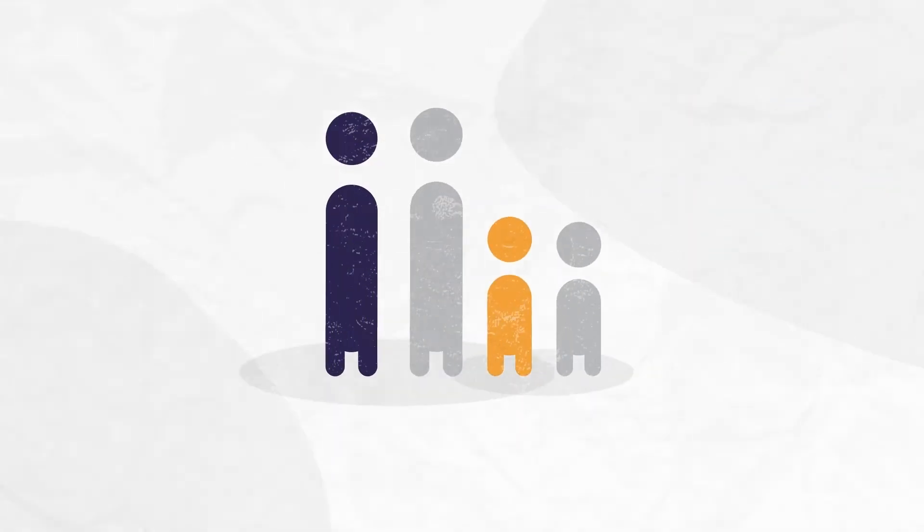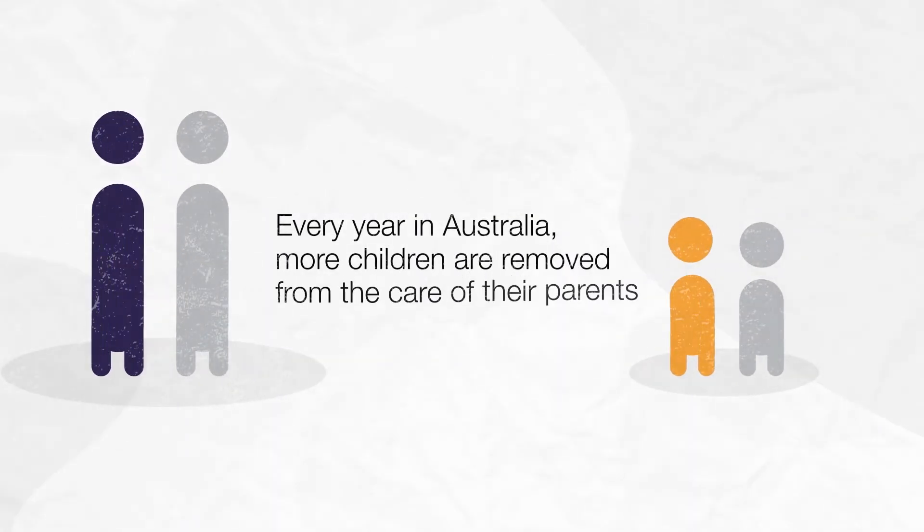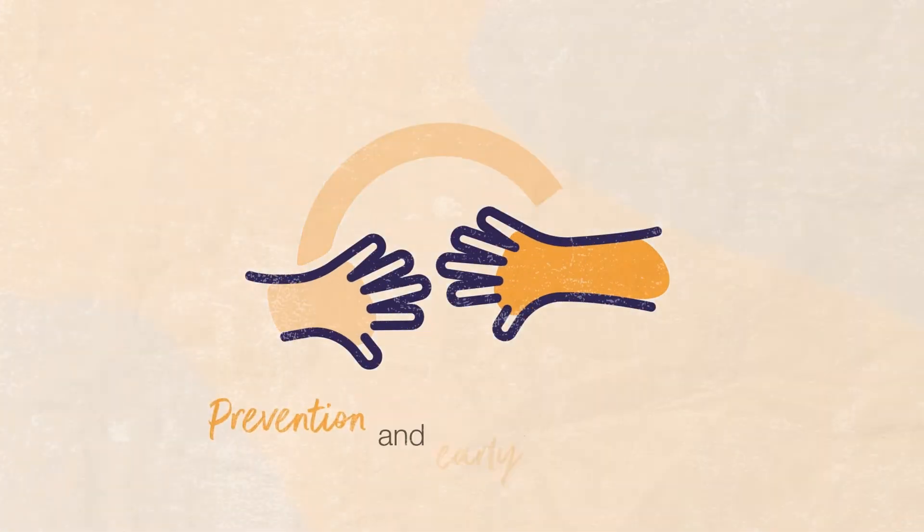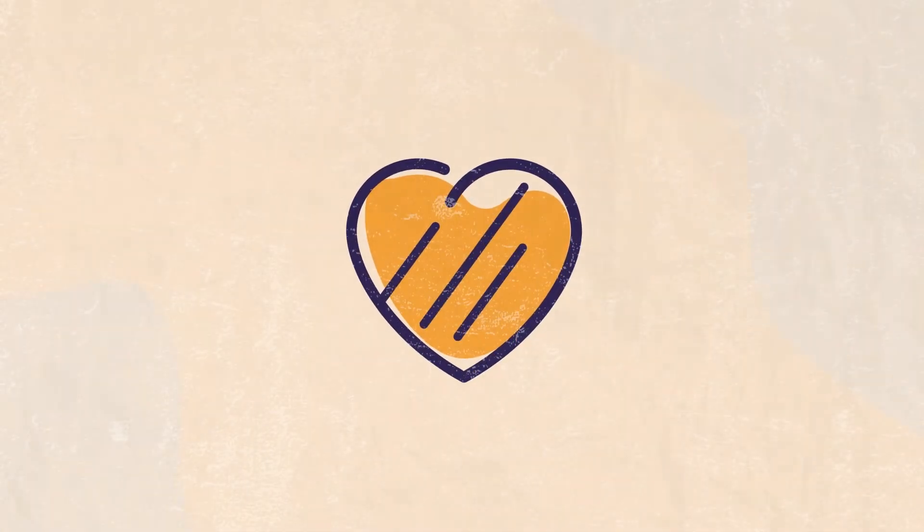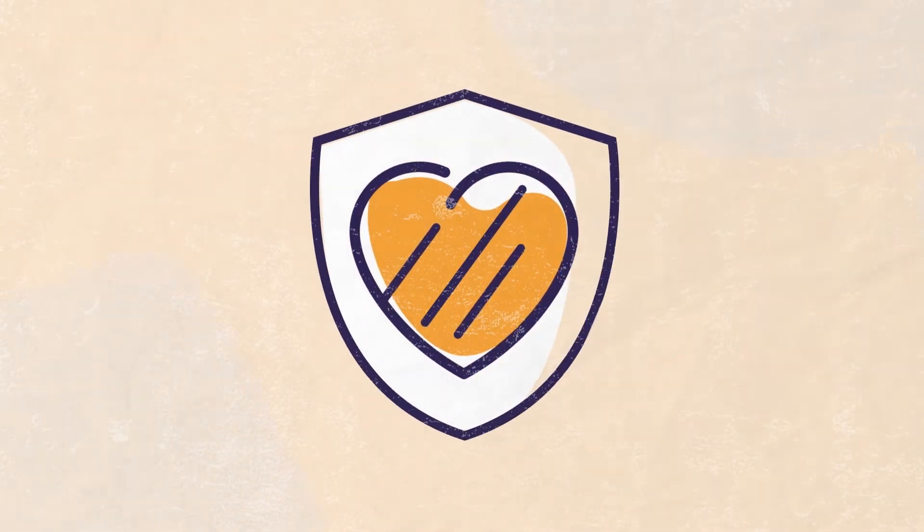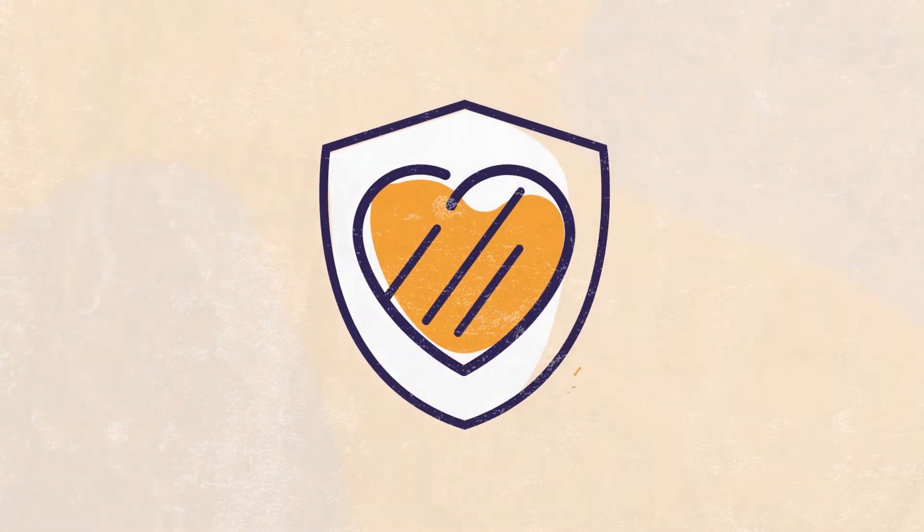Every year in Australia, more children are removed from the care of their parents. Our solution is to deliver prevention and early intervention programs to stop the rising number of children and young people being abused, neglected or harmed.